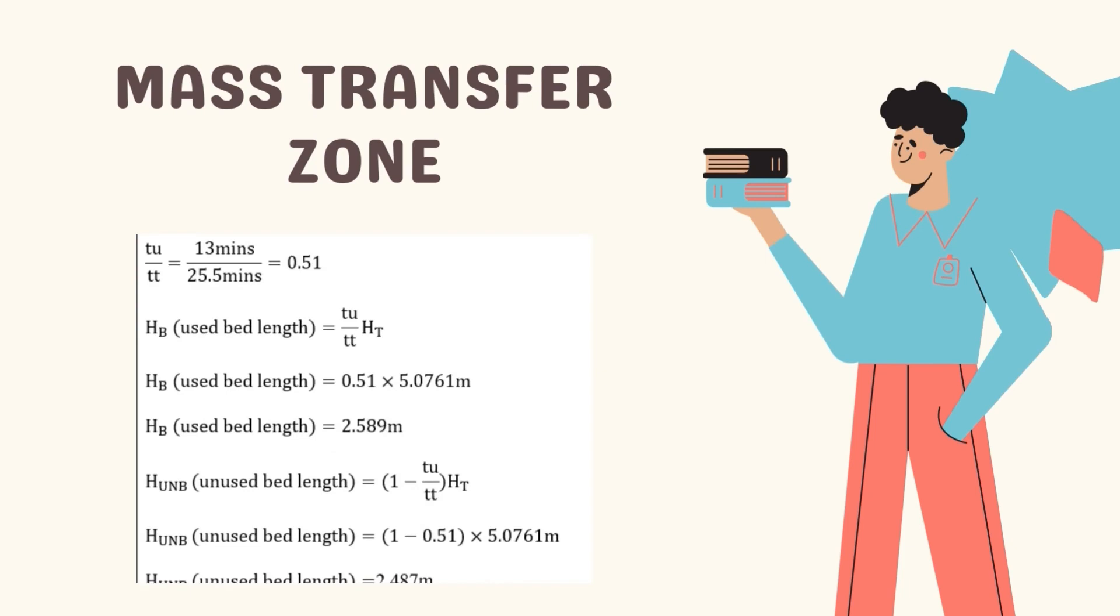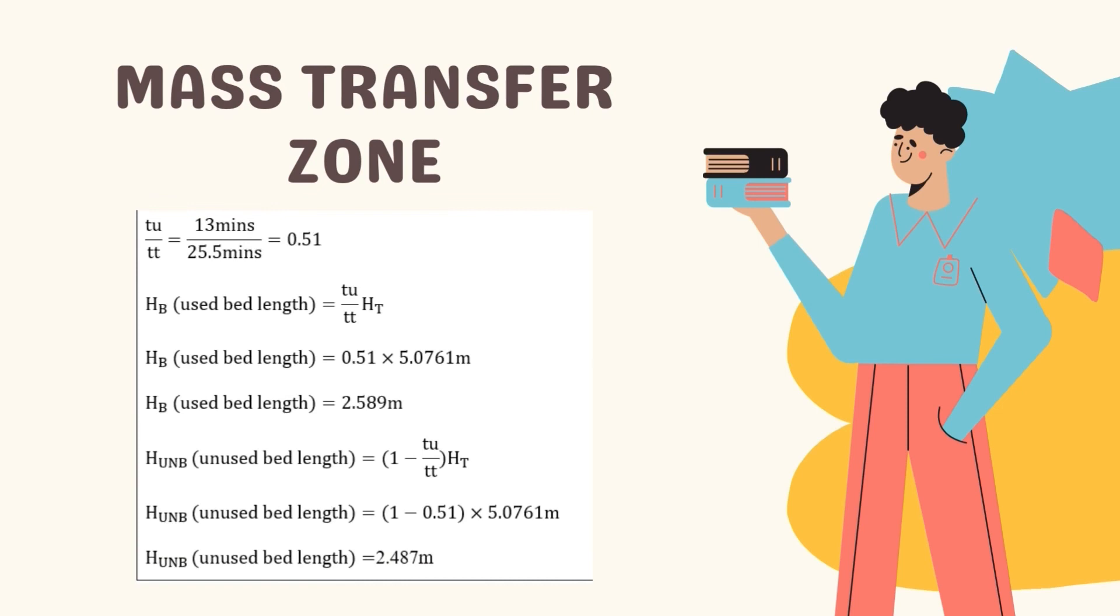Lastly, to calculate the mass transfer zone, t/t₀ is 0.51 minutes. The used bed length is t/t₀ multiplied with total bed length. So the value obtained is 2.589 meter. The unused bed length is 1 minus t/t₀, then multiply it with the total bed length. The value obtained is 2.487 meter.